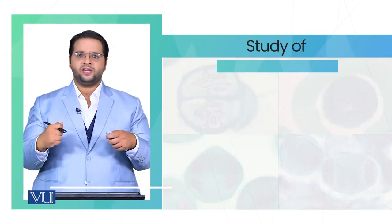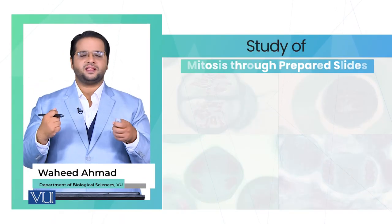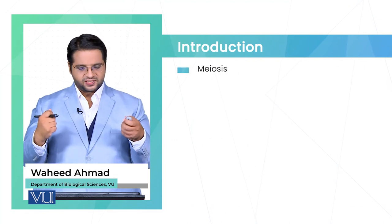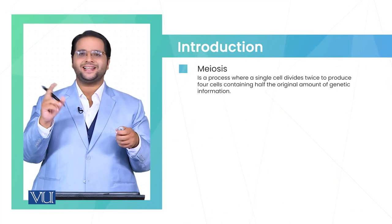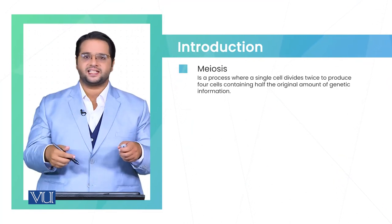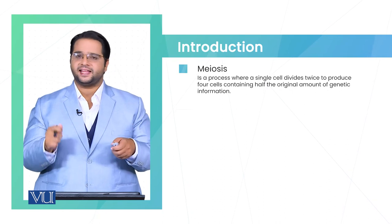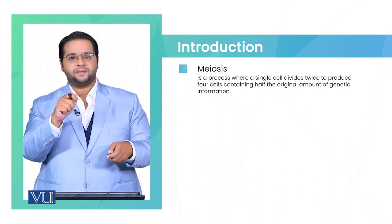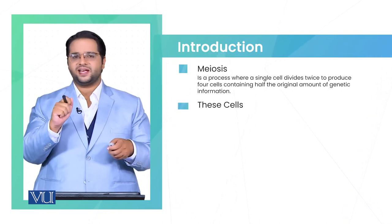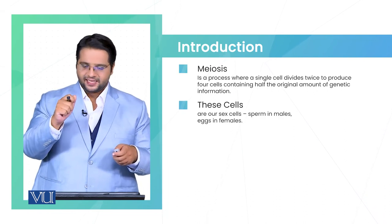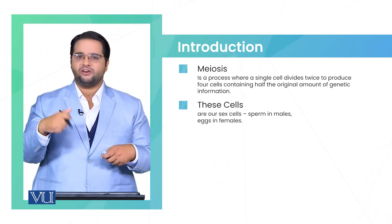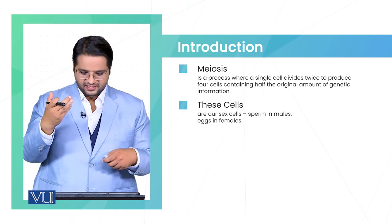Today we are going to discuss meiosis. Meiosis is the process where a single cell divides twice to produce four daughter cells, and they have half the genetic material as the parental cells. These are also known as gametes or sex cells, which are involved in the production of new organisms.